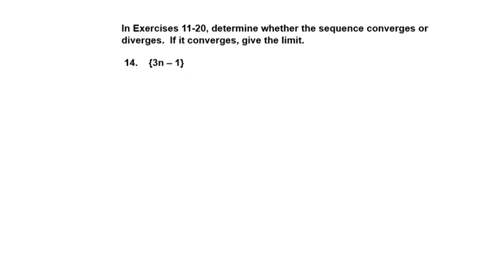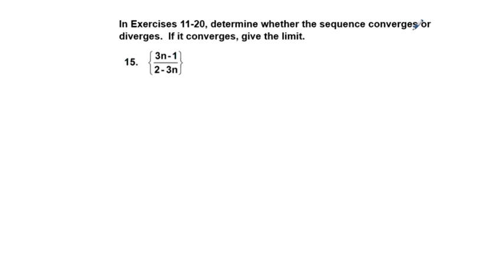Number 15. Determine whether the sequence converges or diverges. If it converges, give the limit. Well, in this case, one trick you can use is let's put a fairly large number in there and see what the number comes close to. If we say n equals 1,000, a pretty large number, we would have 3,000 minus 1 over 2 minus 3 times 1,000, which would be 3,000. So we would have 2,999